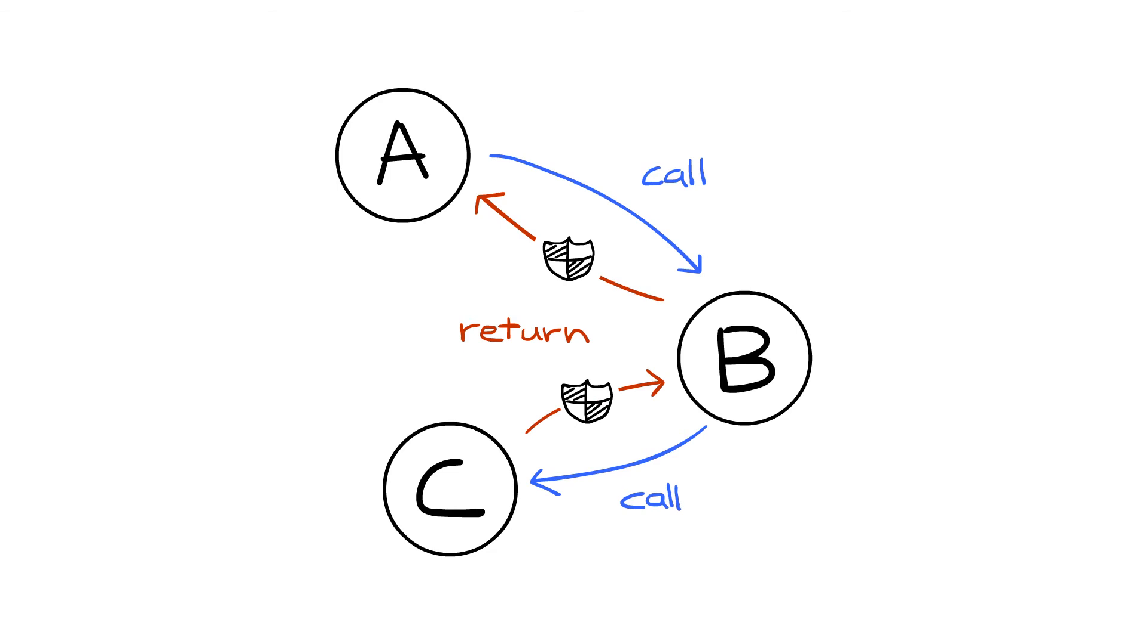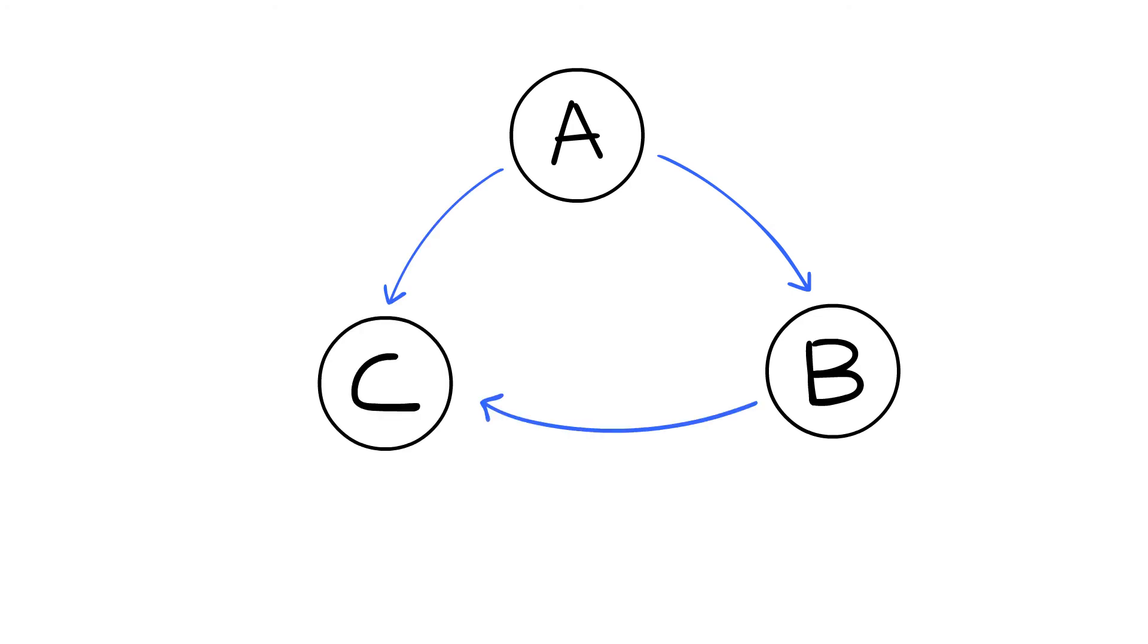Consider the following example. Here we see a program with function A that calls function B and then calls C. Function B also calls C. So if we draw the control flow graph, it would look something like this. Notice that C gets called twice from two different functions. Let's say we're running the program and we're about to finish function C. Where do we return to?